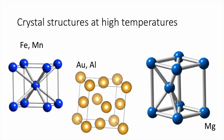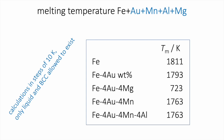These are the crystal structures of the five elements under ambient conditions. Iron and manganese would be body-centered cubic, gold and aluminium are face-centered cubic or cubic close-packed, and magnesium is hexagonal close-packed under ambient conditions. In our calculation we force everything to be in just the BCC structure and allow only two phases to exist: one is liquid and the other is a BCC form of the mixture.